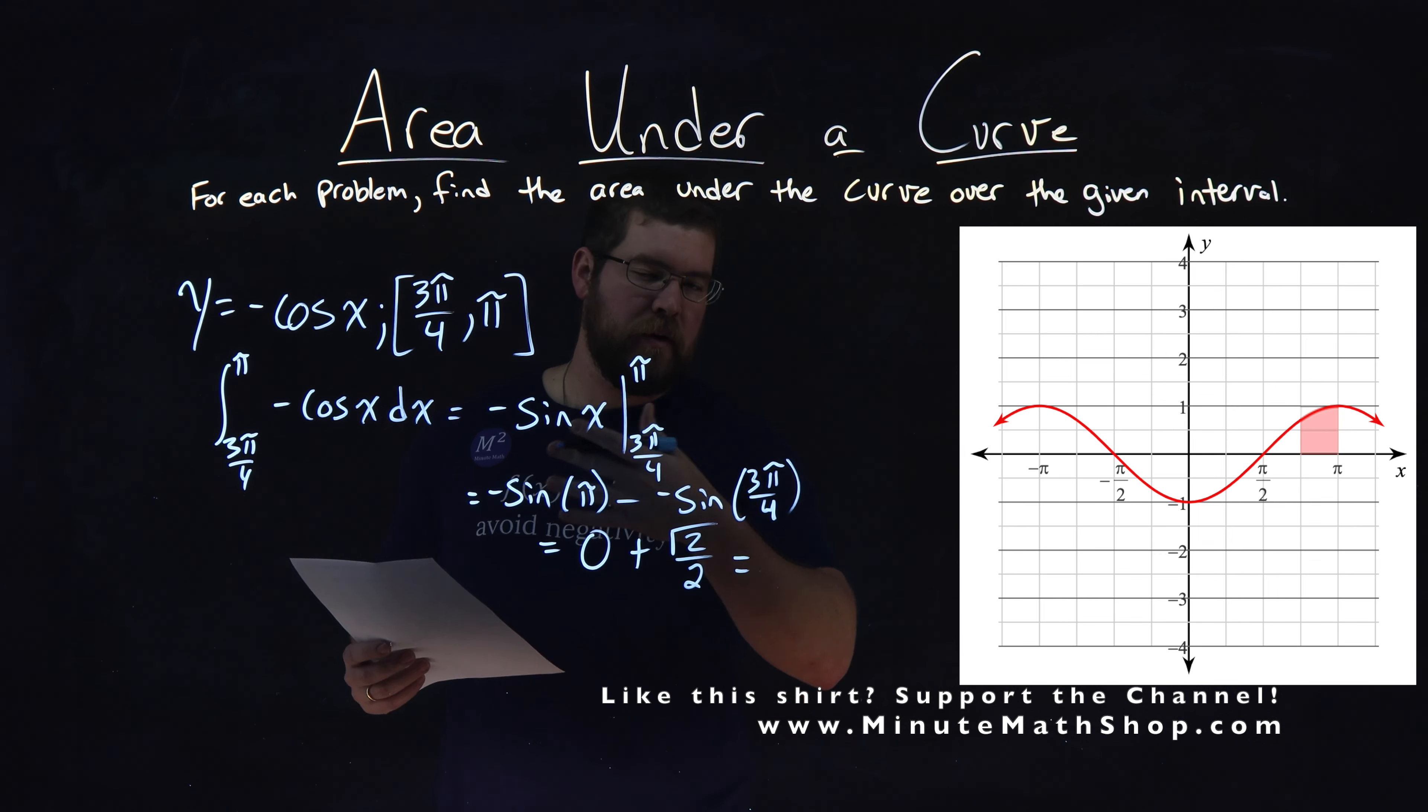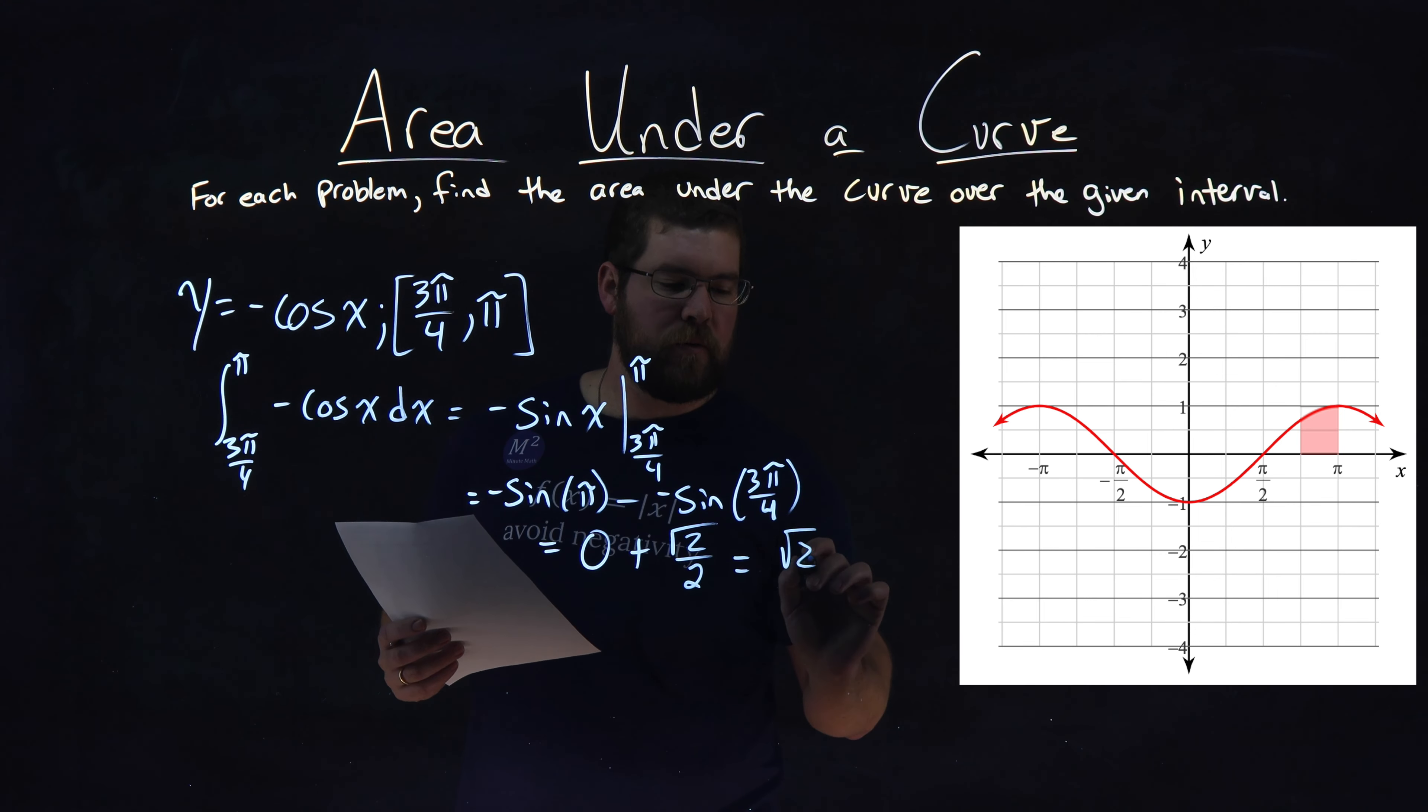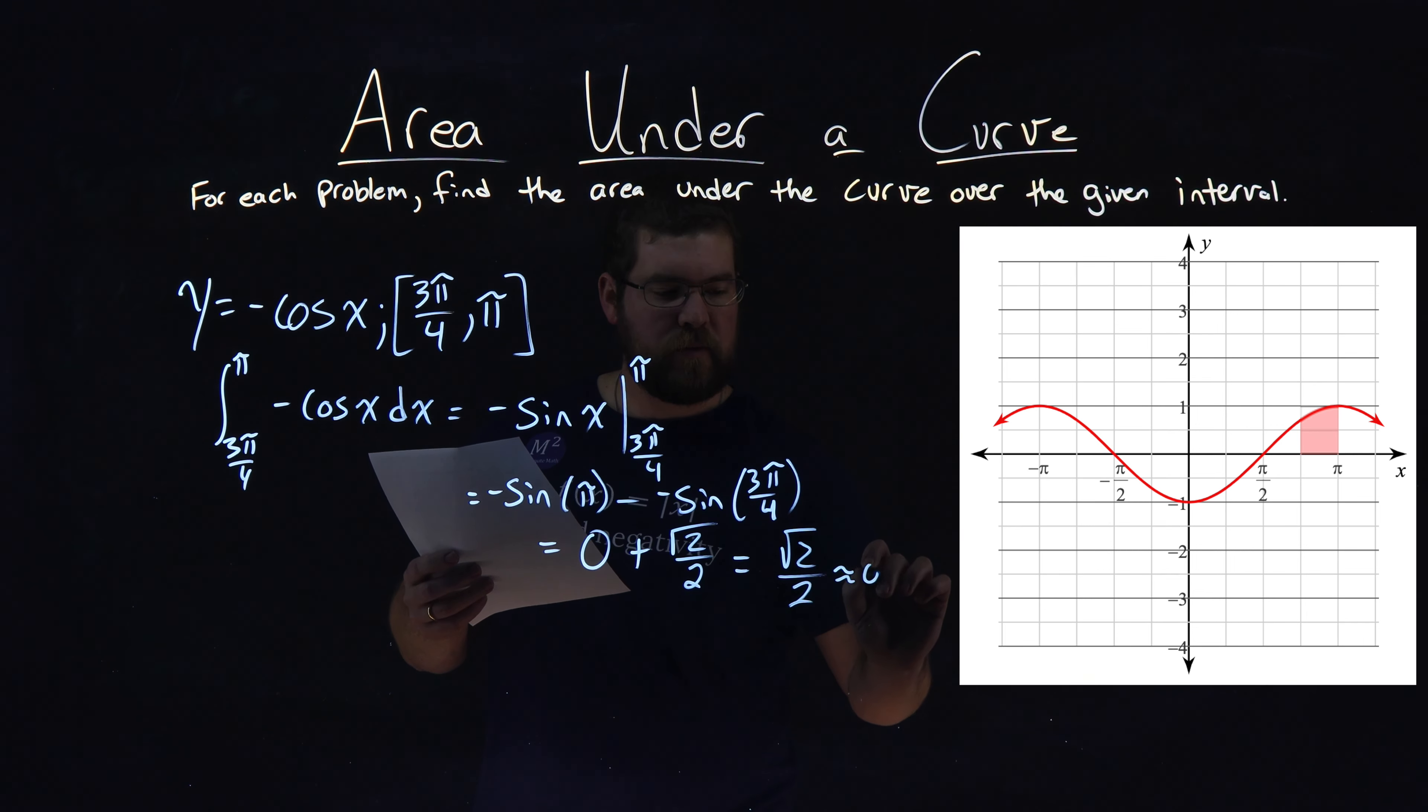This just comes out to be, right, adding 0, square root of 2 over 2. And as a decimal, it's approximately 0.707.